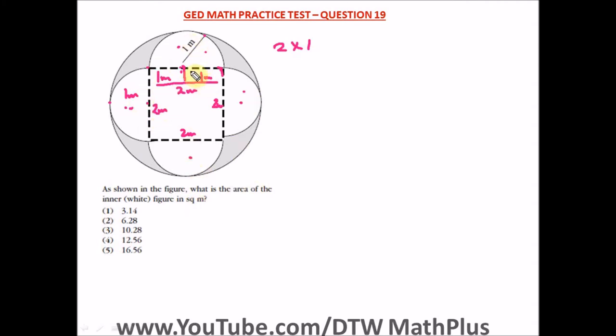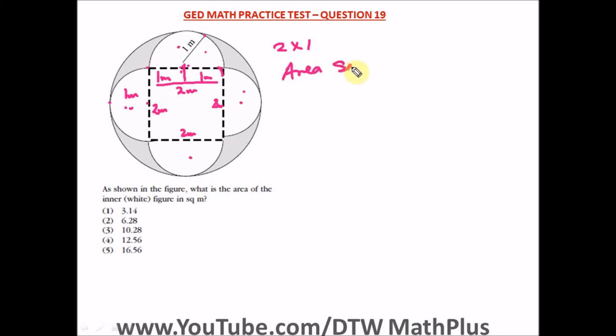We need to find the area of the inner white figure, which is the area of all the semicircles plus the area of the square. The area of the square is simply l squared — length times breadth, and since all sides are equal, that is two squared, which equals four square meters.